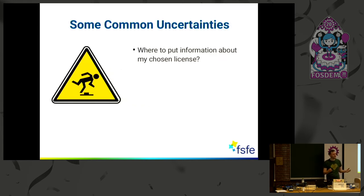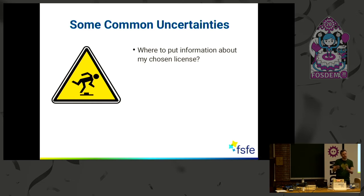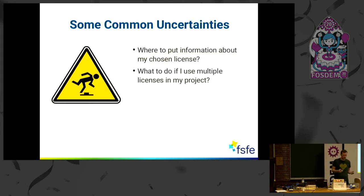There are some common uncertainties when doing free software licensing. The most basic question is: where do I put the information about my chosen license? You do free software, you release it, and you think about which license it should have — under which conditions can users use and reuse your software. But where to put that? In the readme file? In some license text somewhere in the repo? Do we have to edit every file? We don't know — many people don't know.